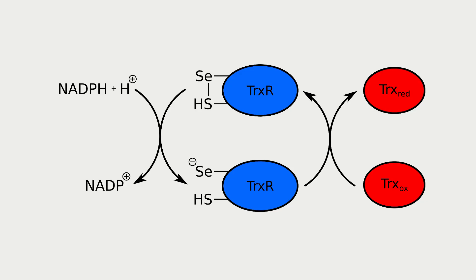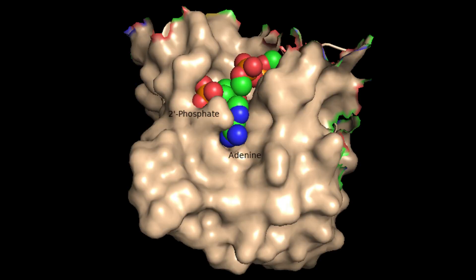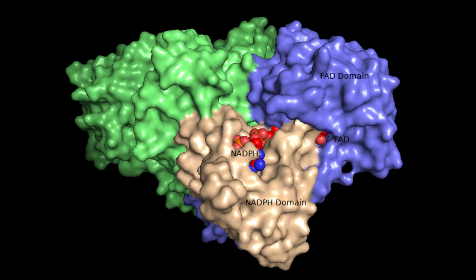In order to reduce thioredoxin, first NADPH binds and reduces thioredoxin reductase. This reduced enzyme then binds thioredoxin, reducing it and allowing thioredoxin to then reduce many other chemicals within the cell. The NADPH binding domain is located near the FAD binding domain at the N-terminus of the protein. The central beta sheets interact with the adenine substituent, and two arginine residues hydrogen bond with the 2' phosphate group.